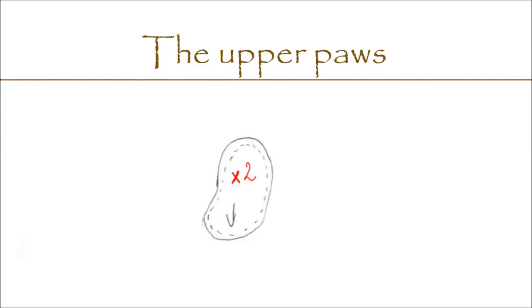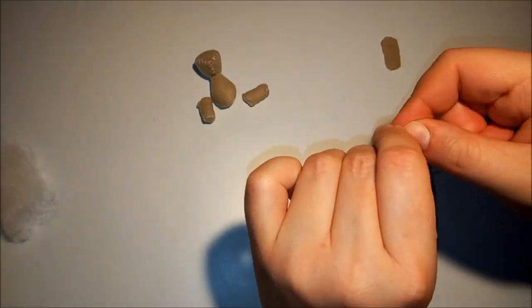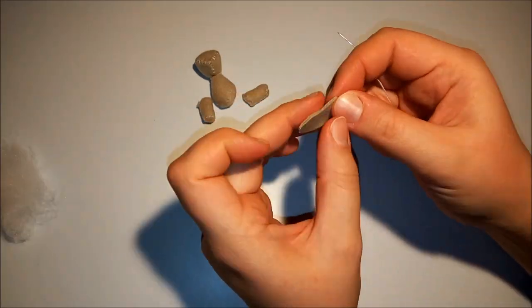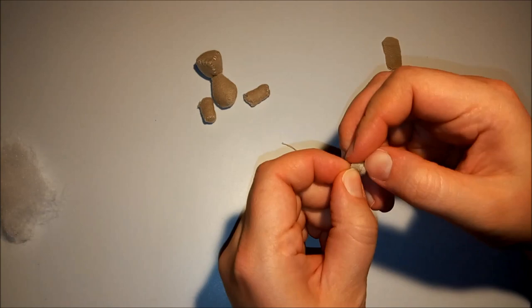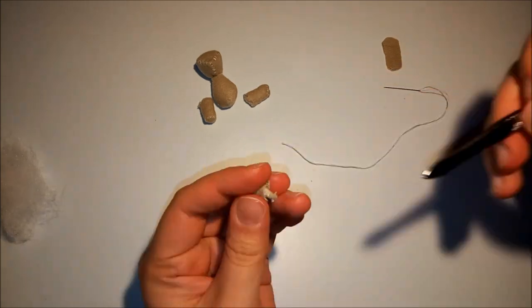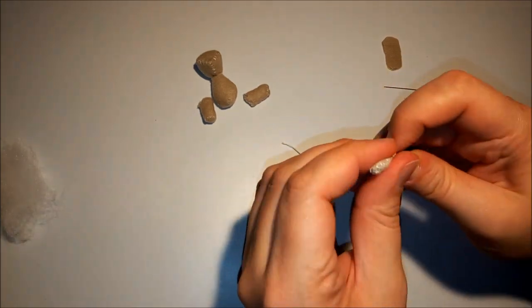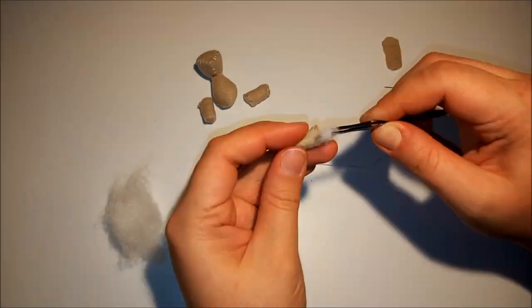The upper paws are cut four times, two for each paw. We sew together leaving a hole for filling. After insertion we sew the hole.